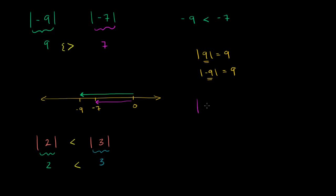Now let's compare the absolute value of negative 8 to the absolute value of 8. They're both 8 away from 0 — negative 8 is 8 to the left of 0, and 8 is 8 to the right of 0. So both of these evaluate to 8. The absolute value of negative 8 is 8, and the absolute value of 8 is 8, so clearly 8 equals 8.